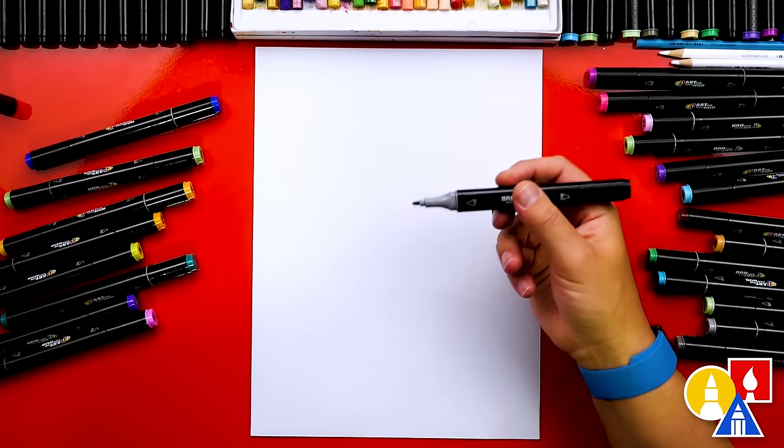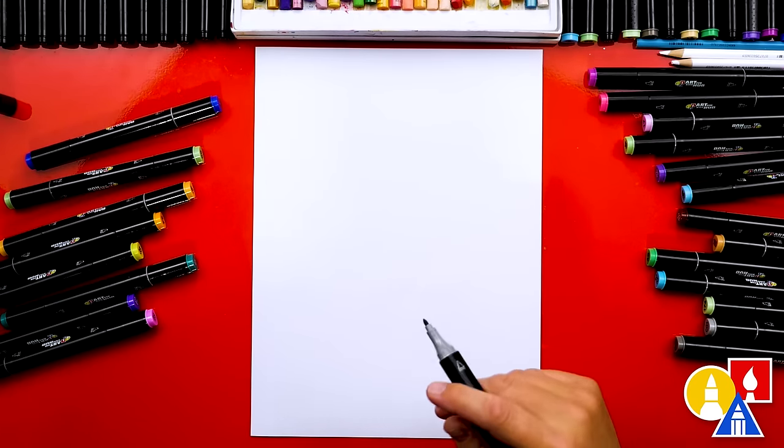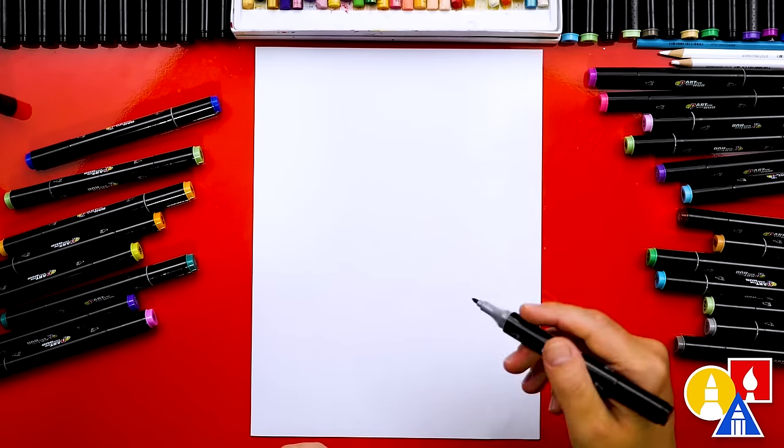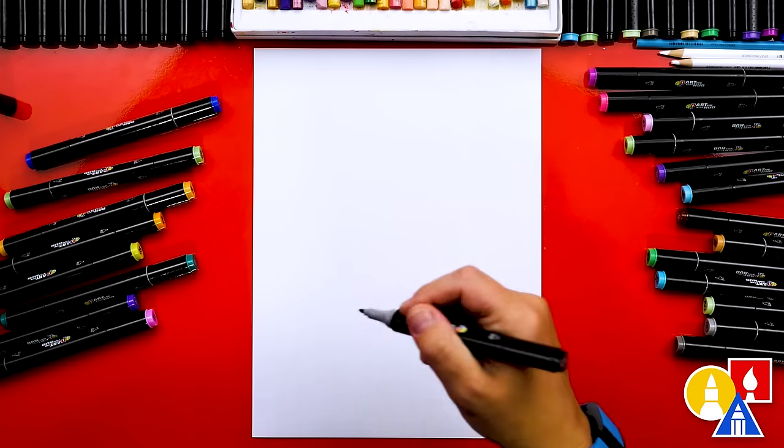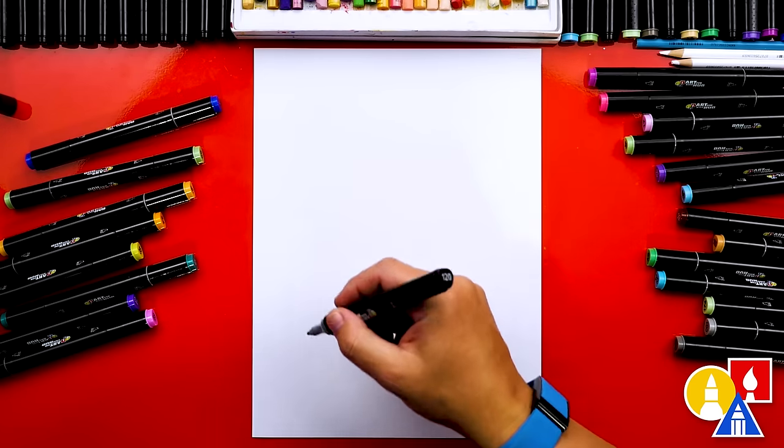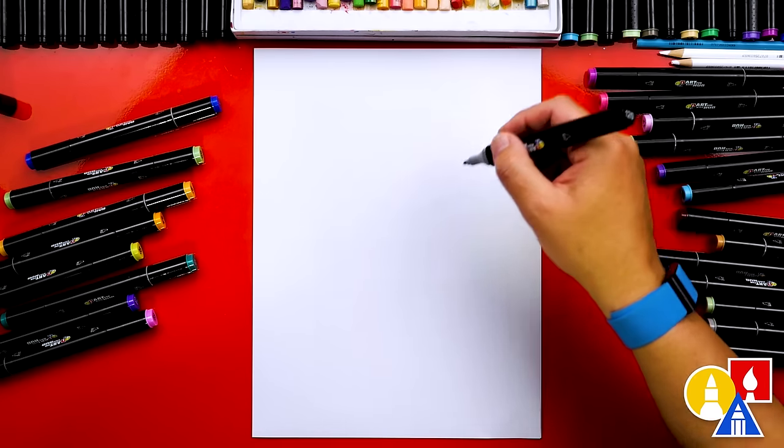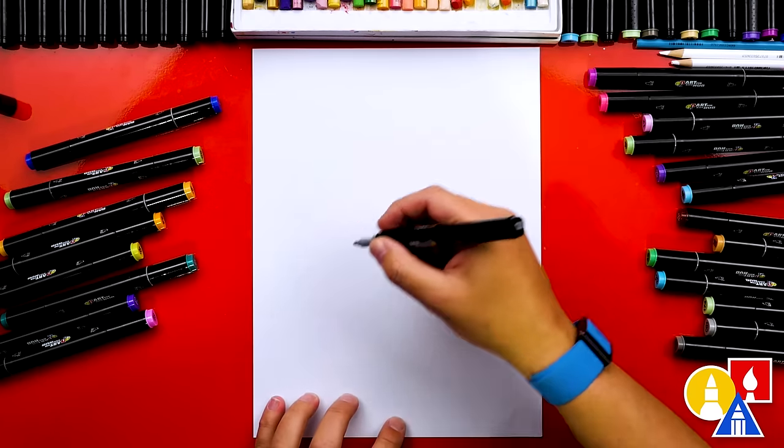I'm using a marker to draw with but remember you could use a pencil instead. You could get all the lines just the way that you want it and then you could use the marker after and trace over the pencil lines. Let's first start by drawing our kid and we're going to draw him or her down here in the bottom left of our paper so that we have room for the kite flying high up in the air on this side.